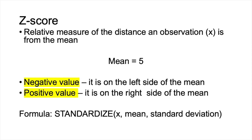The z-score is the relative measure of the distance an observation is from the mean. For example, if the mean is 5, we want to know — for an observation x — what is the distance from its mean. If we compute the z-score and the value is negative, it indicates that the observation is on the left-hand side of the mean.